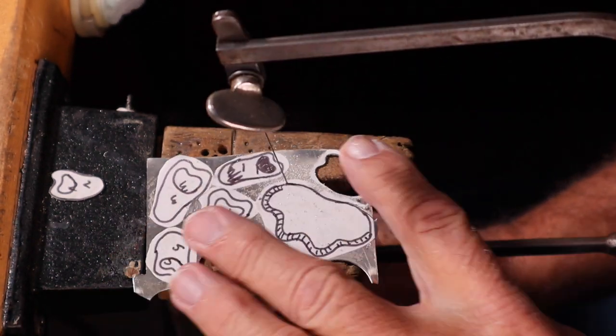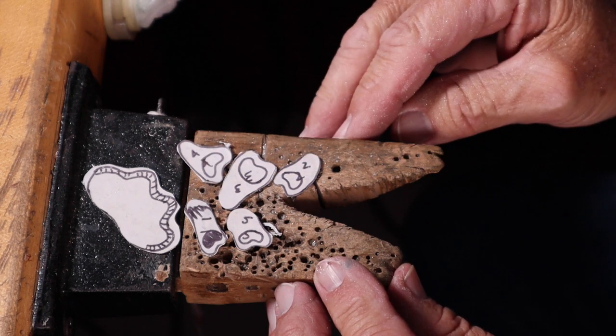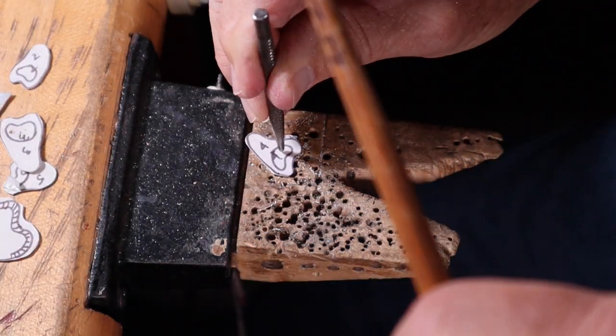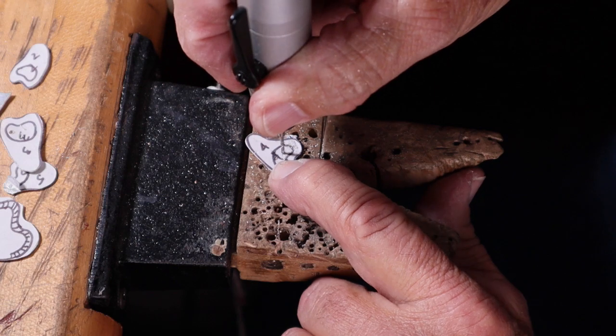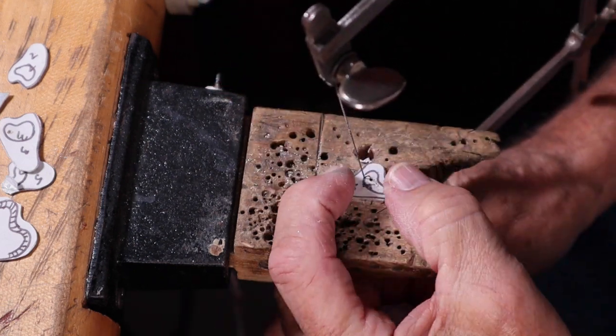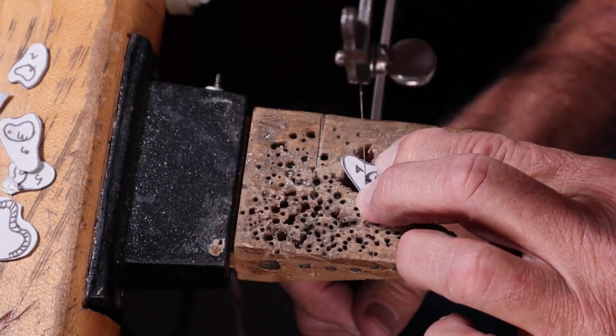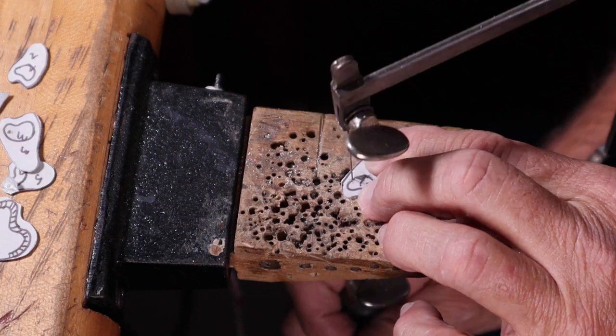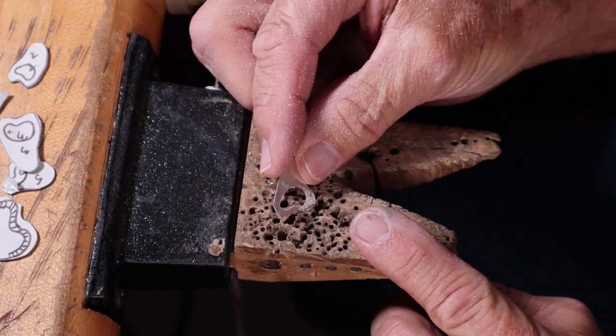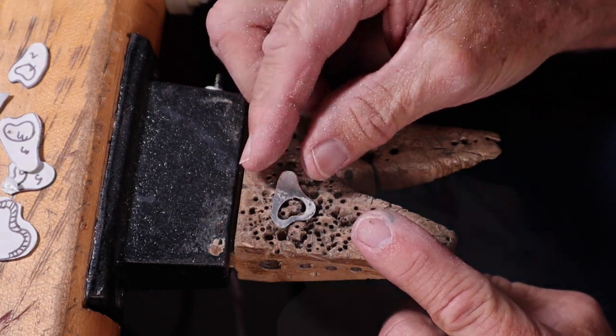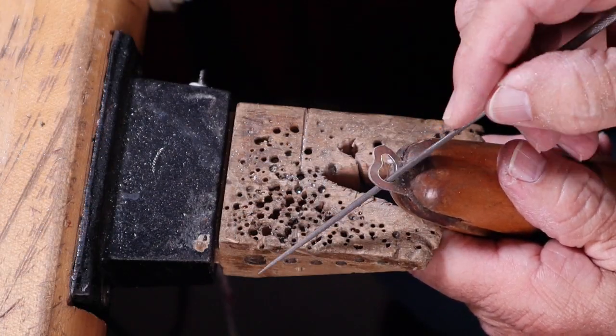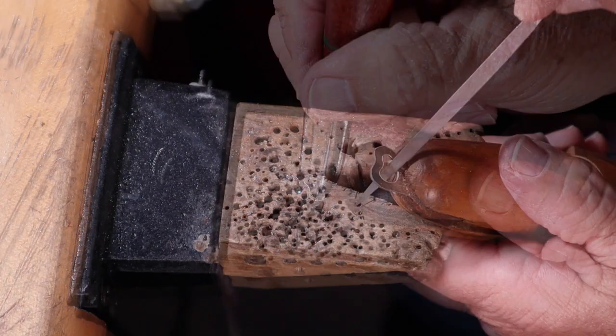We'll cut out the main shapes with the jeweler's saw and then the piercing we have to center punch it and drill it through and that way we can saw out the inner parts of the petals. All those edges should be smoothed off with a file and the inner piercings we can polish those up using a burnisher.